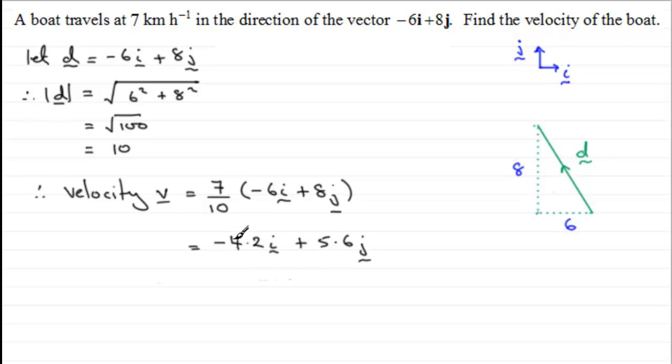If you worked out the magnitude of that by doing the square root of 4.2 squared plus 5.6 squared, you will find it will come out to 7, and it's a multiple of the direction vector there.